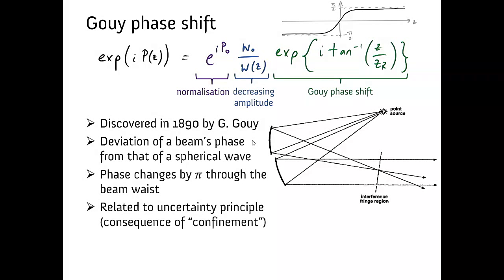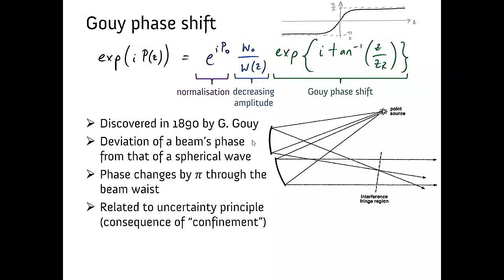it's related to the uncertainty principle. It's a consequence of confining any wave. It doesn't have to be a wave of light. It can be a wave of matter, electrons or atoms. Any wave field when brought through focus exhibits this Gouy phase shift. Seeing it is quite tricky though.